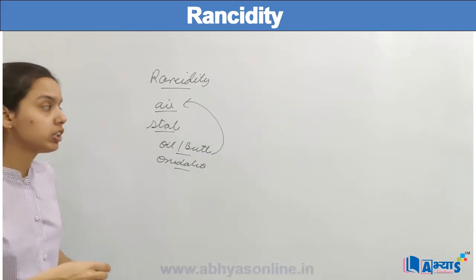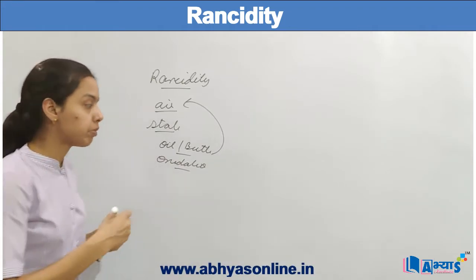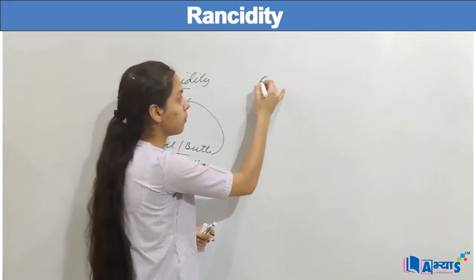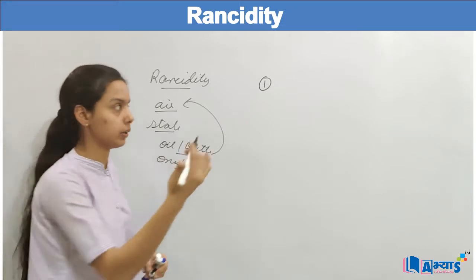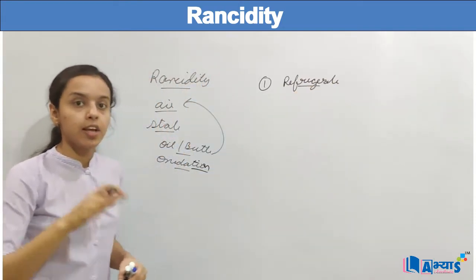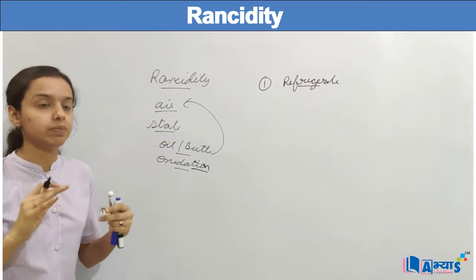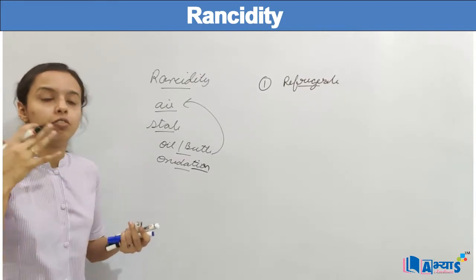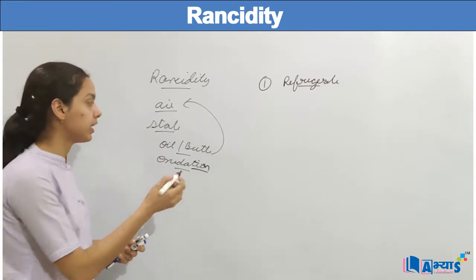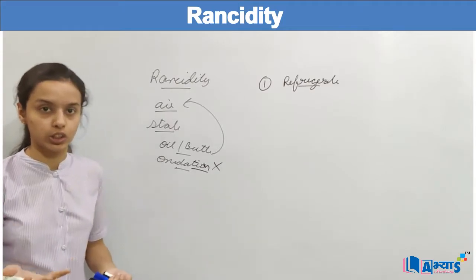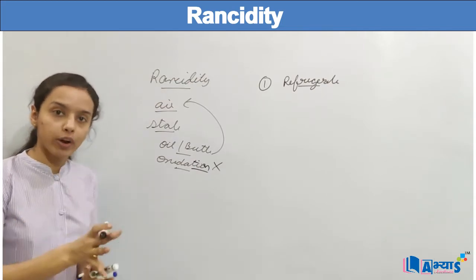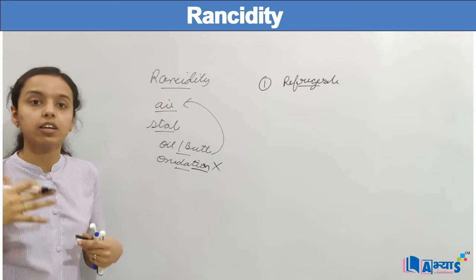Let us discuss some measures by which we can prevent this oxidation, and when we have prevented oxidation, we have prevented rancidity. The first step in preventing rancidity is by using a refrigerator. When we use a refrigerator, we are decreasing the temperature, and we don't allow air to go into the fridge. When there is no air in the refrigerator, there is no oxygen and therefore no oxidation. So the food will remain fresh, but we should always avoid using stale food and eat fresh food.